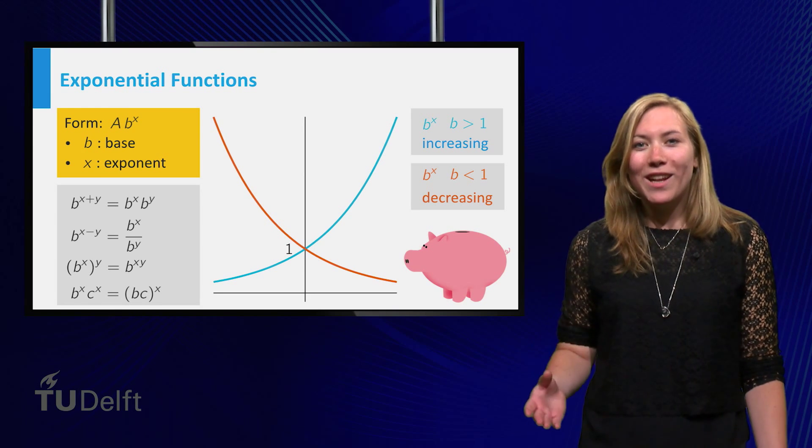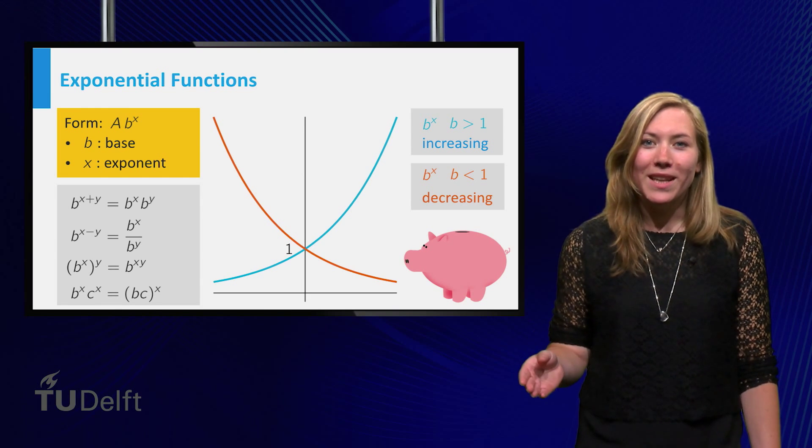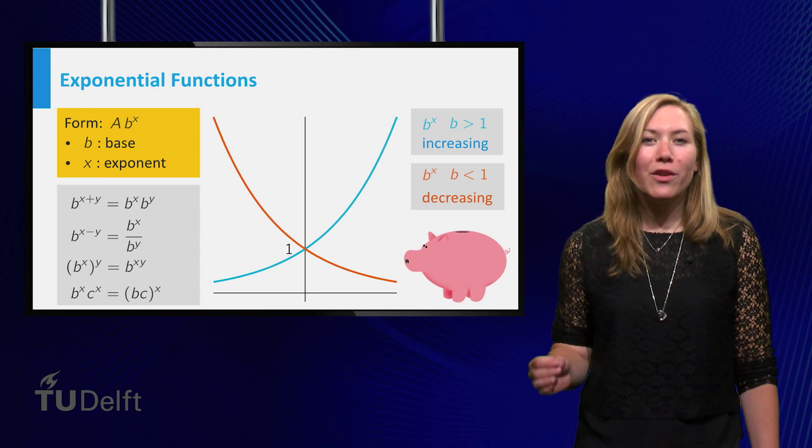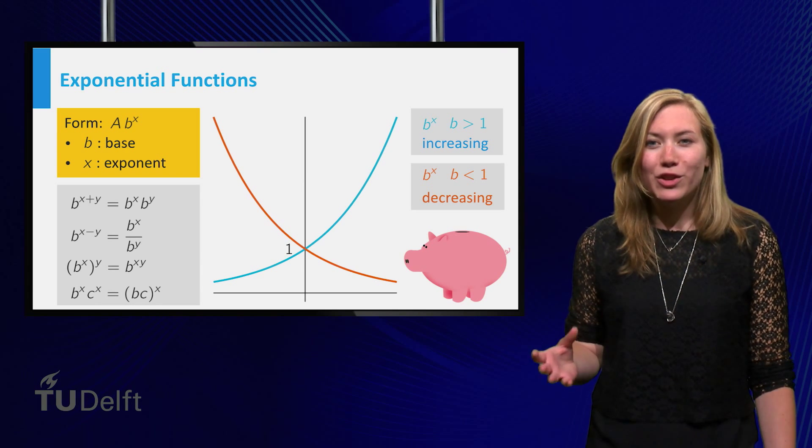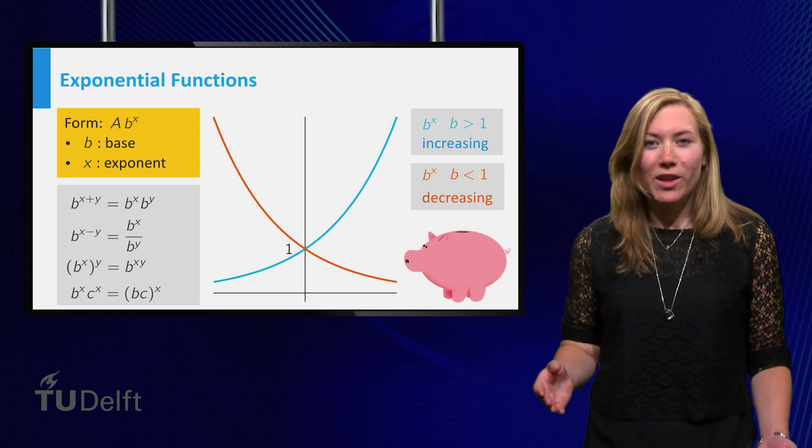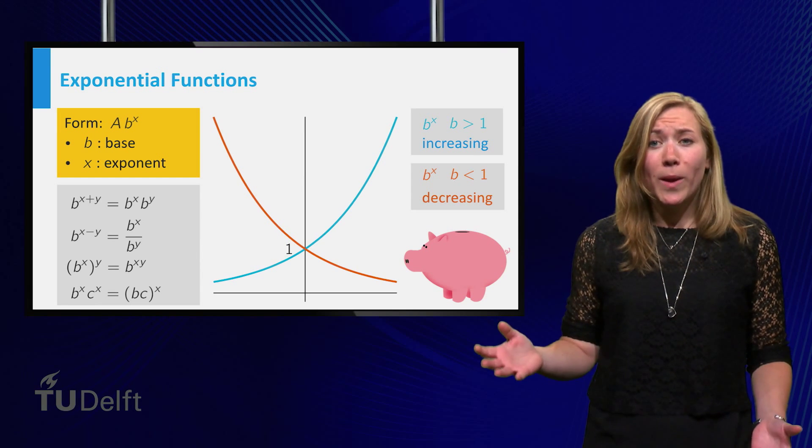Moreover, for b larger than 1, the function b to the power x grows faster than any polynomial function, which is why exponential growth is sometimes used as a synonym for very quick growth.